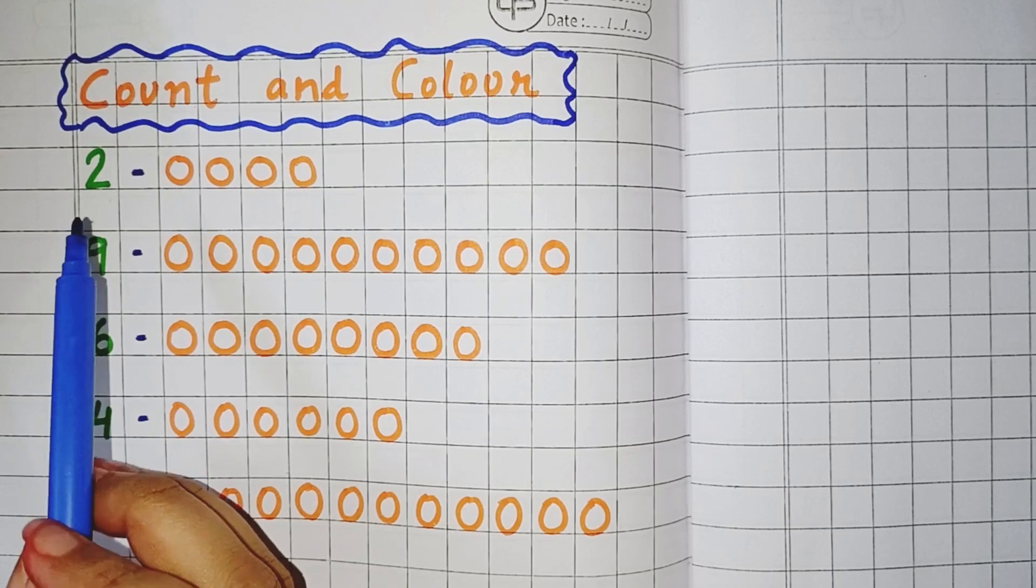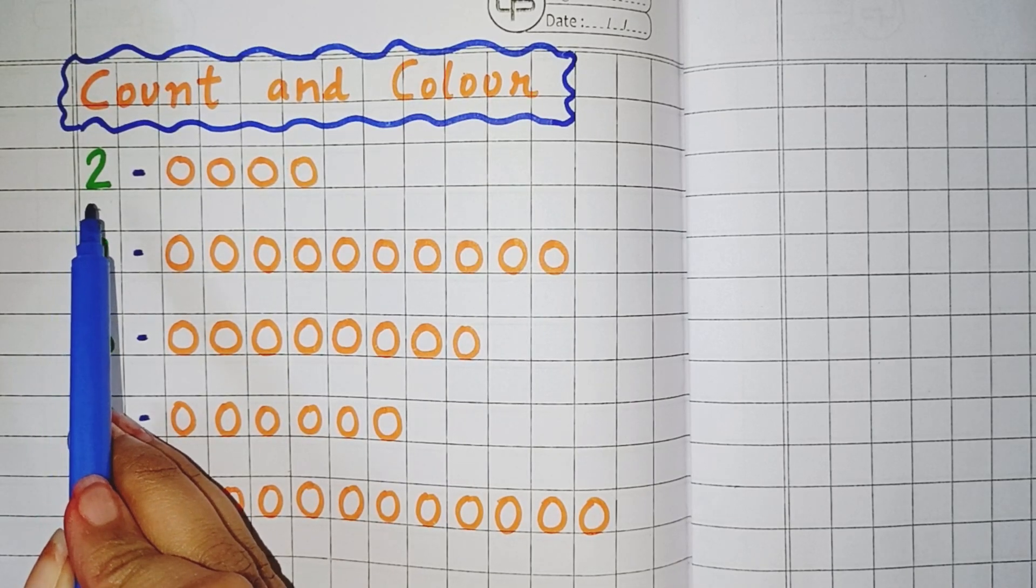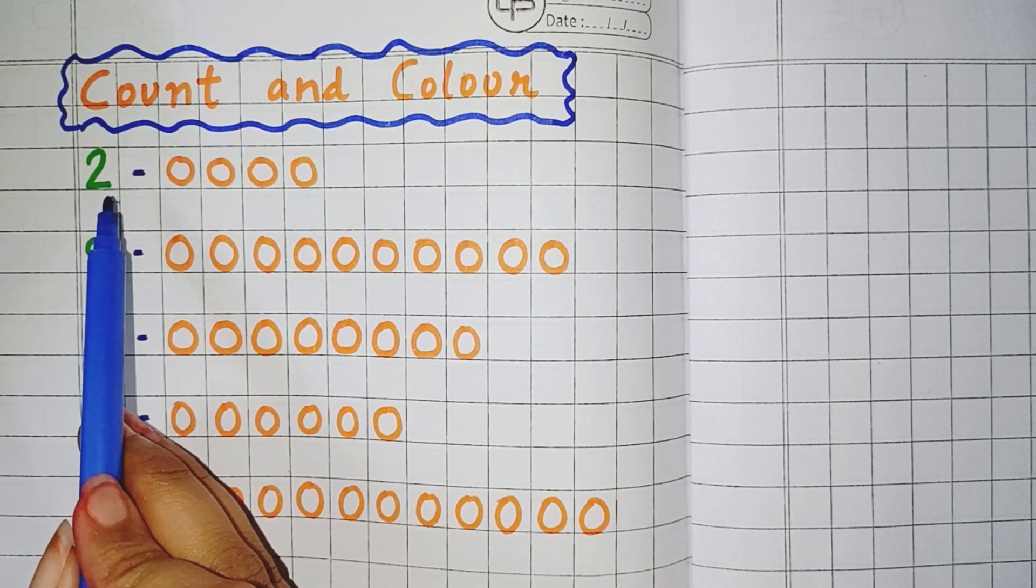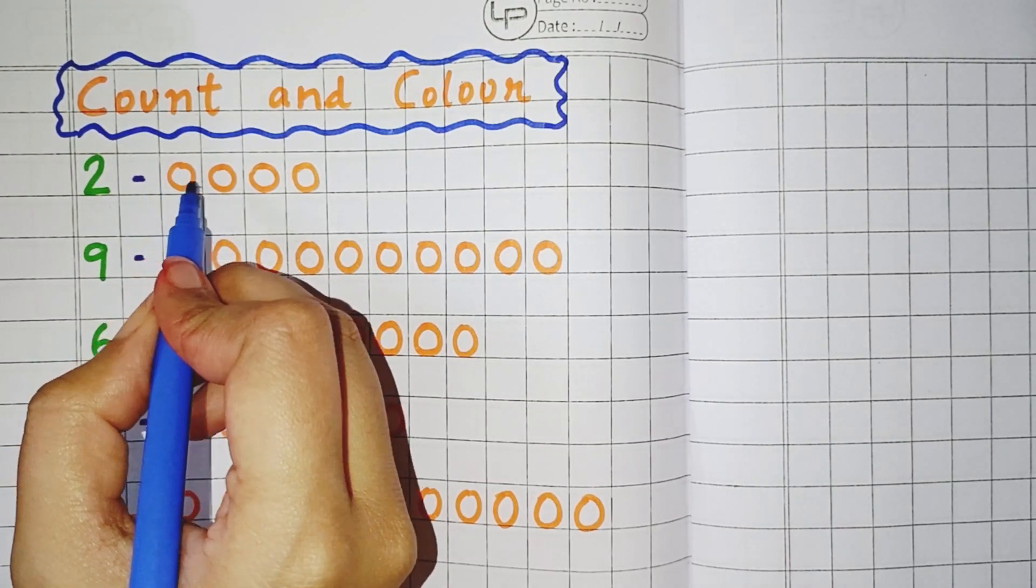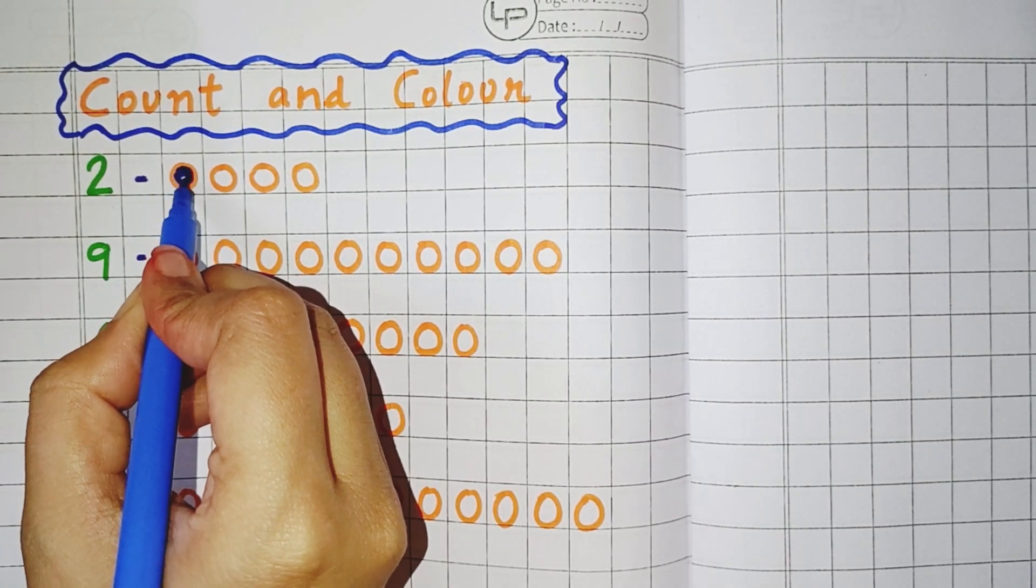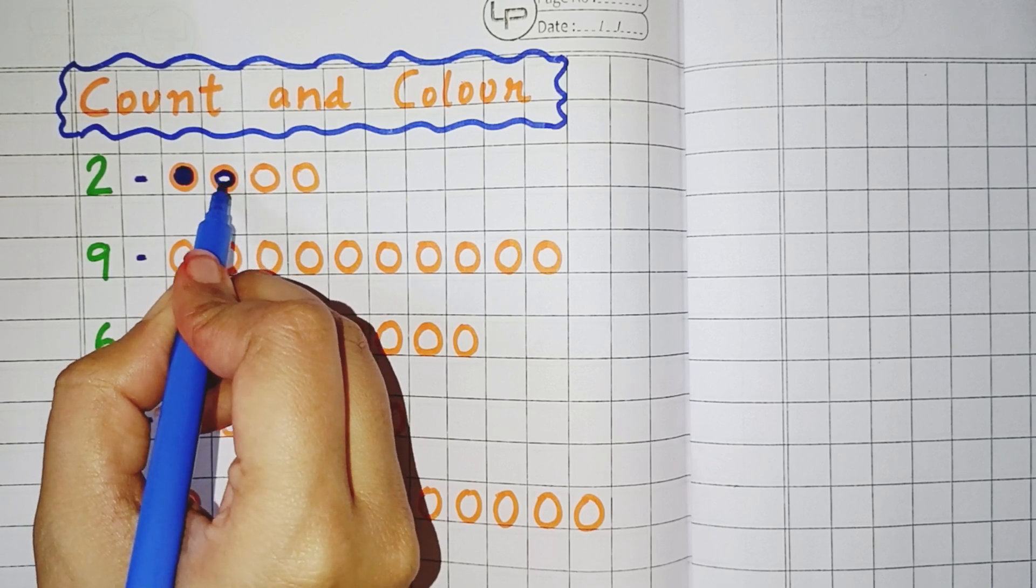So kids, you can see the first number here is 2. So you have to color 2 objects. You will color 2 objects like this way. 1, 2.